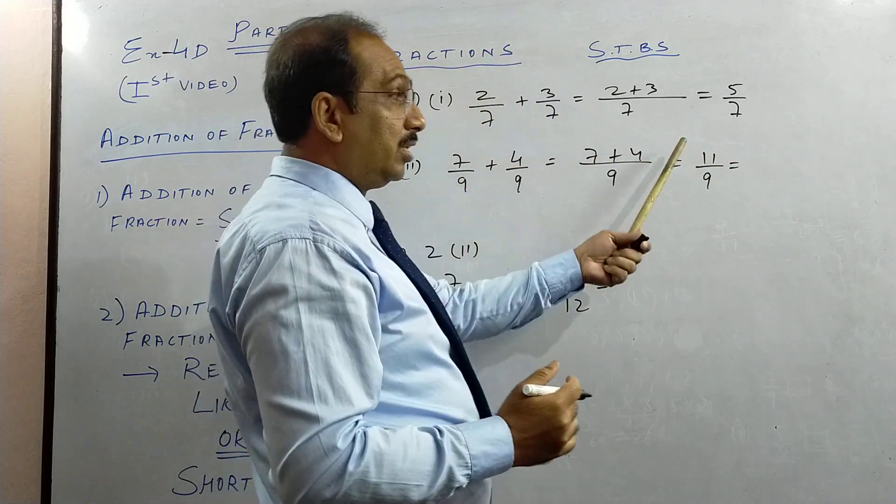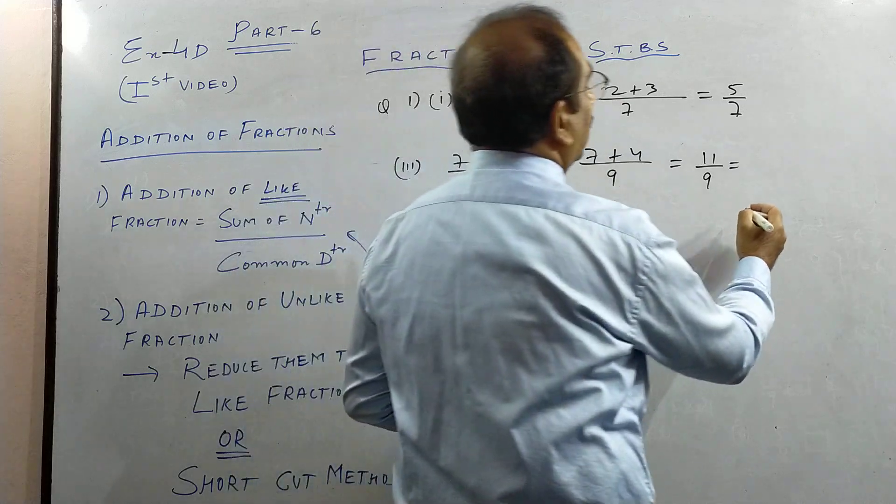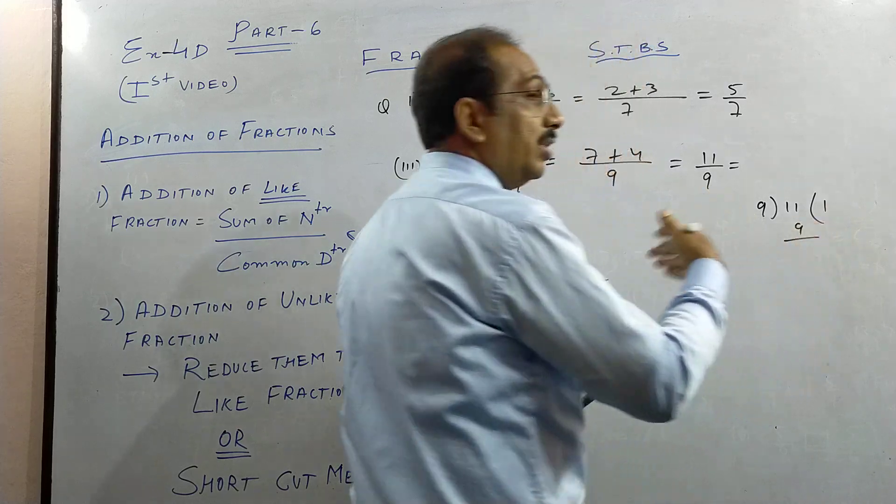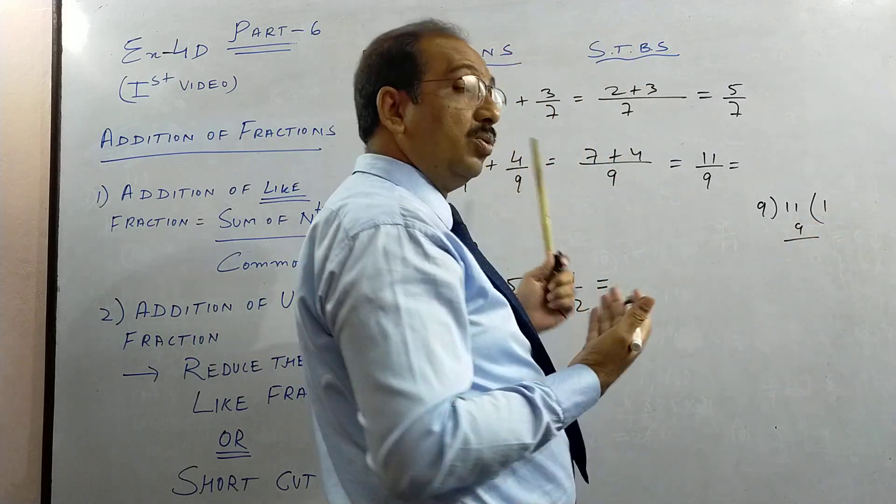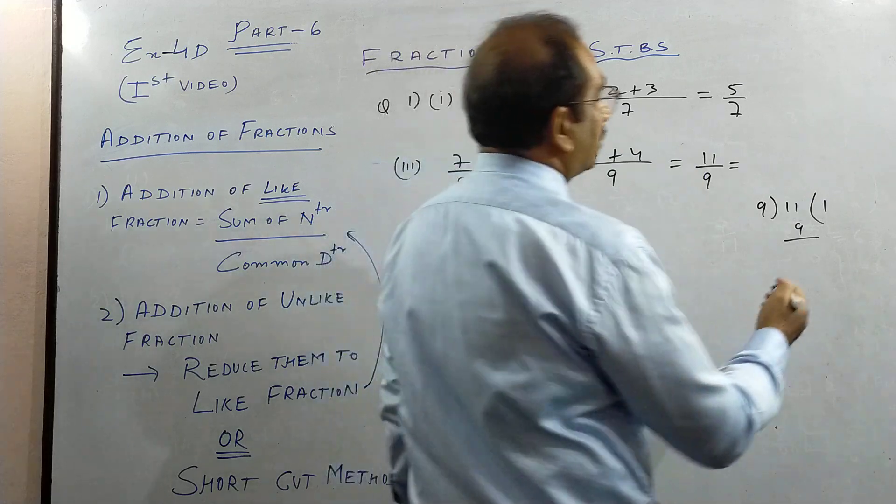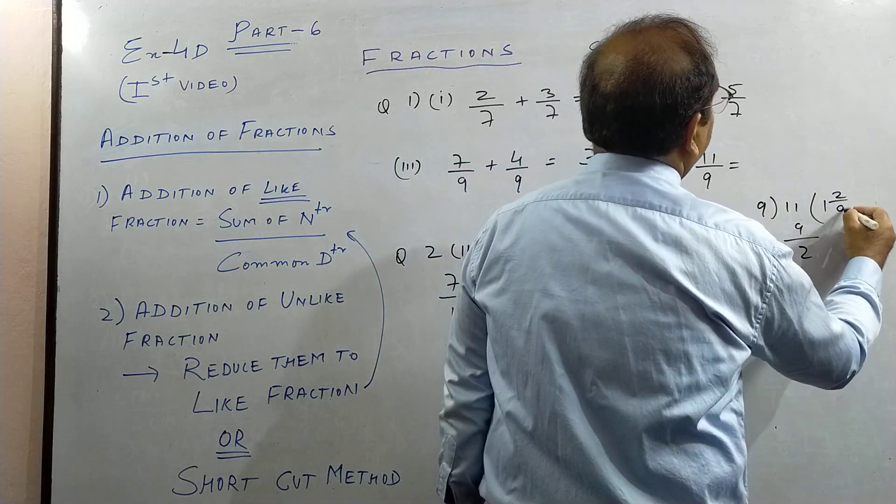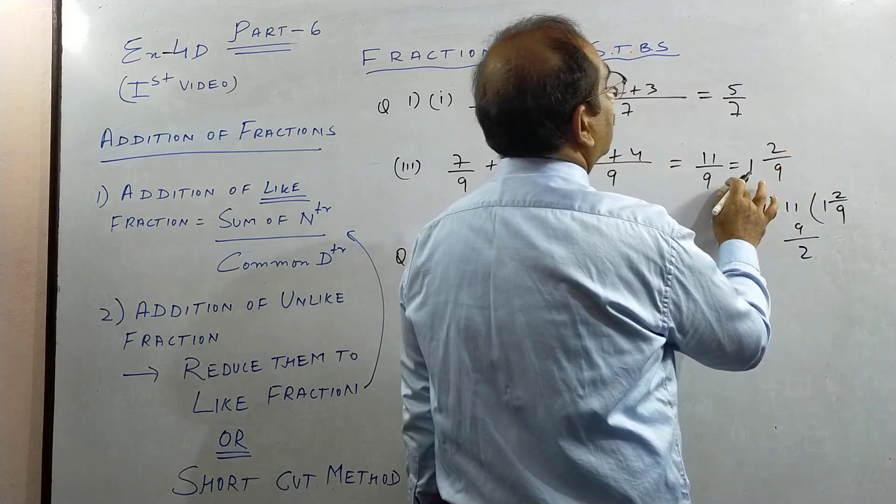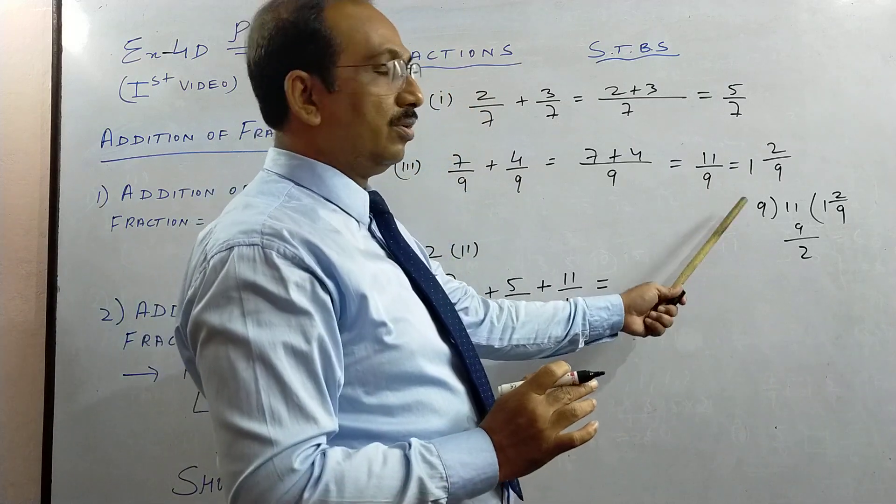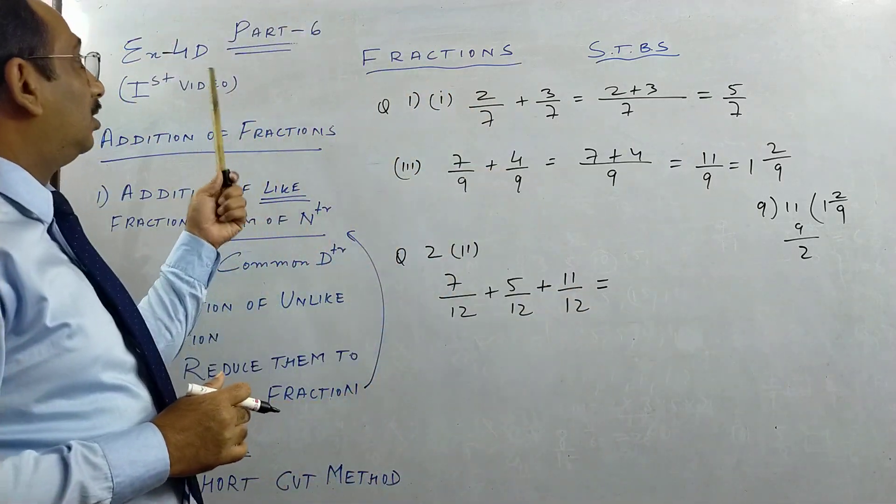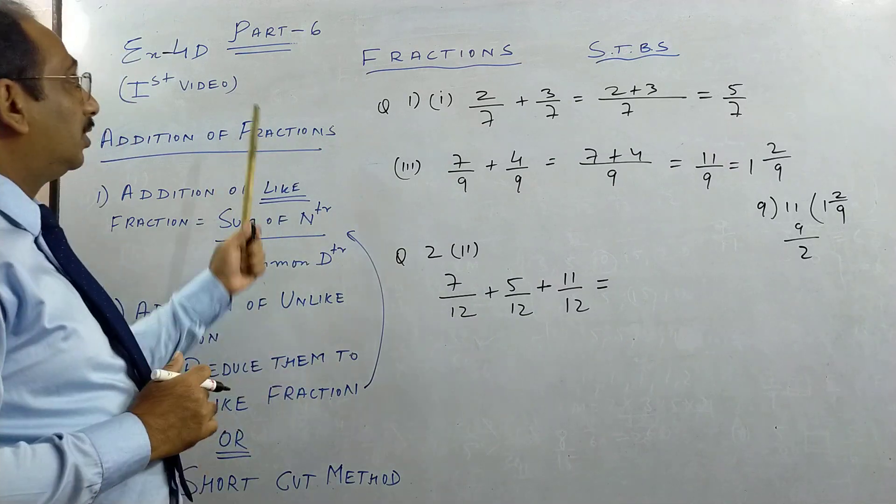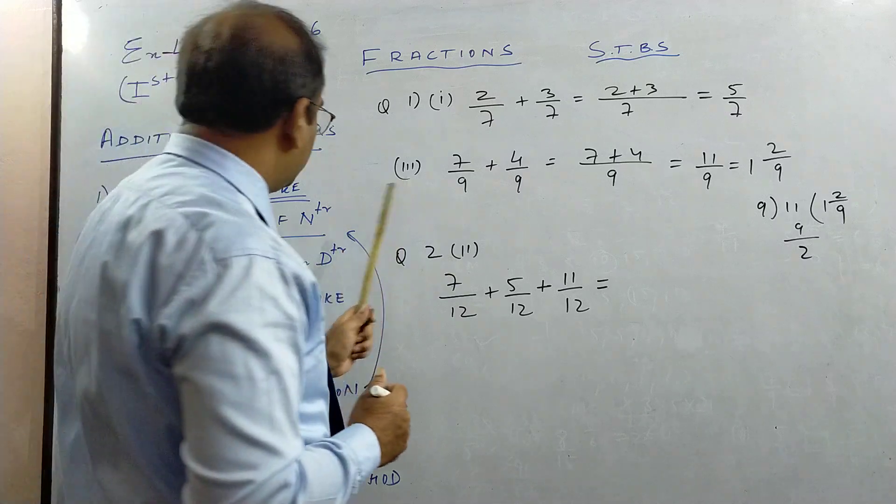7 common denominator, add the numerator. 11 by 9, this is improper fraction. Numerator more than denominator. You can change it to mixed fraction. 9 ones are 9. This I have done in my part 2 or part 3 video. You see nicely how to convert improper to mixed.